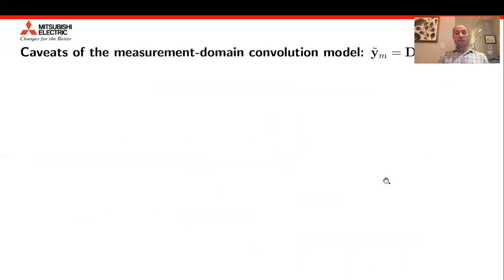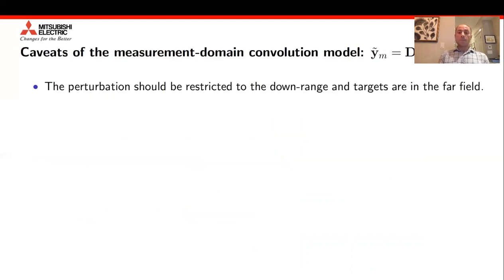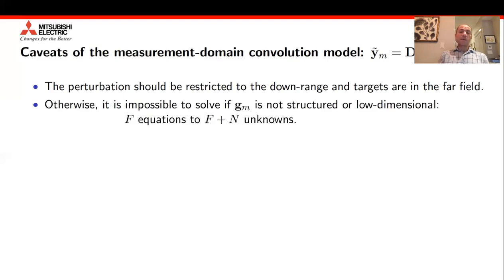The overwhelming majority of the works in the literature that have addressed this problem have attempted to reconstruct jointly the gain and phase vector G as well as the unknown radar image X. However, that model actually has its problems. Specifically, that model is only accurate if the antenna perturbation is restricted to the downrange and if the targets are in the far field. That's because for every antenna transmitter-receiver pair, we have F equations corresponding to the number of frequency bins, but we have F plus N unknowns.